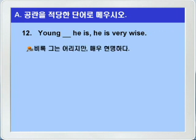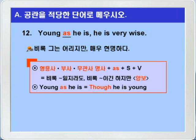12번입니다. young, blank, he is. 비록 그는 어리지만, he is very wise. 그는 매우 현명하다. 정답은 as가 되겠습니다. 형용사나 부사, 혹은 관사 없는 명사 다음에, as 주어동사, 이런 형식이 되면, 비록 뭐뭐일지라도, 혹은 비록 뭐뭐이긴 하지만, 이런 양보의 의미를 갖습니다. young as he is는 though he is young, 이런 의미가 되는 것입니다. 꼭 기억을 해두세요.